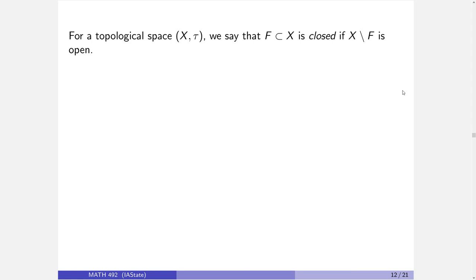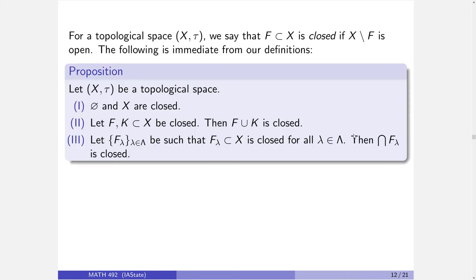It's worth introducing the related term to open, which is closed. In a topological space, a set is called closed if its complement is open. The following immediately follows from our definitions: the empty set and X are closed; the union of two closed sets is closed; and the intersection of any number of closed sets is closed. For closed sets, F and K are the symbols we typically use. The union of any two closed sets is closed and the intersection of any number of closed sets is closed. For example, since F and K are closed their complements are open, and we know the intersection of any two open sets is open — so the complement of F ∪ K must be open, meaning F ∪ K is closed.